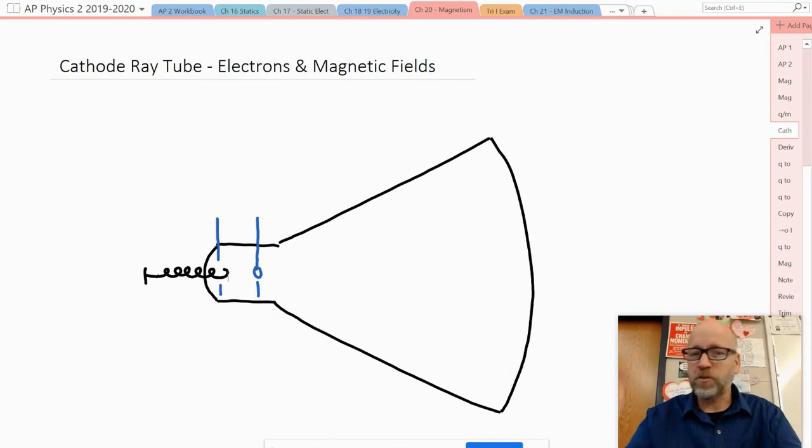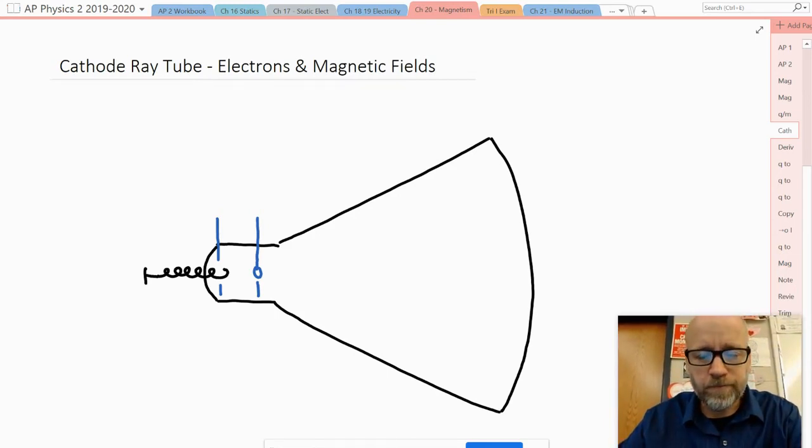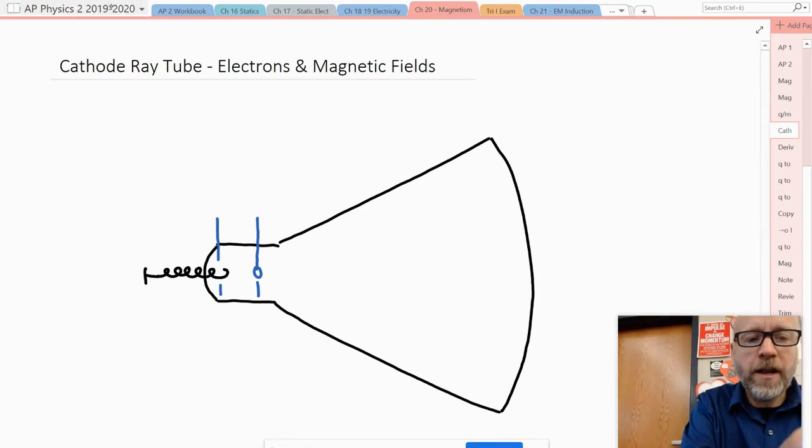All right, so it's time to draw a diagram. So this is sort of a classic picture of a cathode ray tube. And what I'd like to do is to be able to show you what's going to happen with that electron when it's placed in both a magnetic field and an electric field. Let's take a look. So what I have here is an evacuated tube.